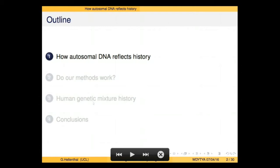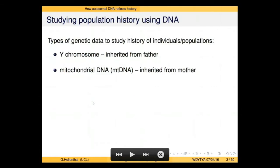We'll be focusing on what's known as autosomal DNA. If you were here last year, these first few slides are going to be very familiar, but I'll walk through them again. There are different types of genetic data that can be used to study the history of individuals. If you've been following genetic ancestry testing companies and genetic ancestry in general, you'll probably be familiar with these two types of analysis. They're the most prominently used in the field for a number of years, largely because they're the most easy to extract and analyze, and they're still being used today.